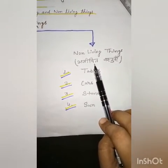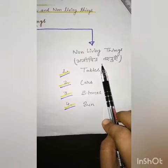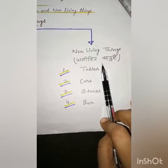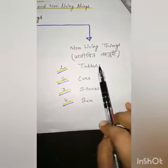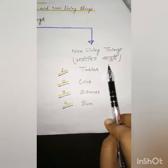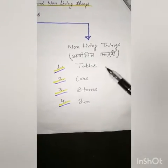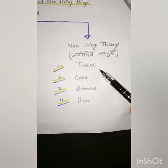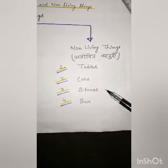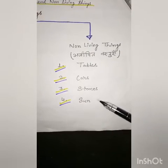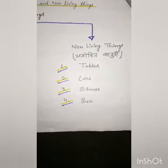Non-living things jo khaa nahi sakti aur jo reproduce nahi kar sakti. Such as tables, cars, stones — yani patthar — and sun — yani ki suraj.